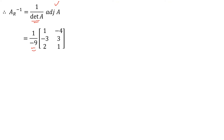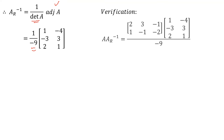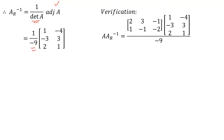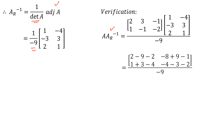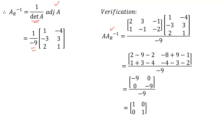Now we verify whether this A-R-inverse is the right inverse of the given matrix A. Since A-R-inverse is the right inverse, it must appear on the right of matrix A. When we multiply A into A-R-inverse, we get the identity matrix of order 2. Hence it is proved that A-R-inverse is the inverse of the horizontal matrix A. Also note that if you try to find A-R-inverse into A, it will never be equal to any identity matrix of any order.